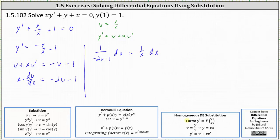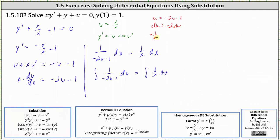And now we integrate both sides of the equation. Notice that the left side requires u substitution, where u is equal to negative two v minus one, du is equal to negative two dv, indicating negative one half du equals dv.